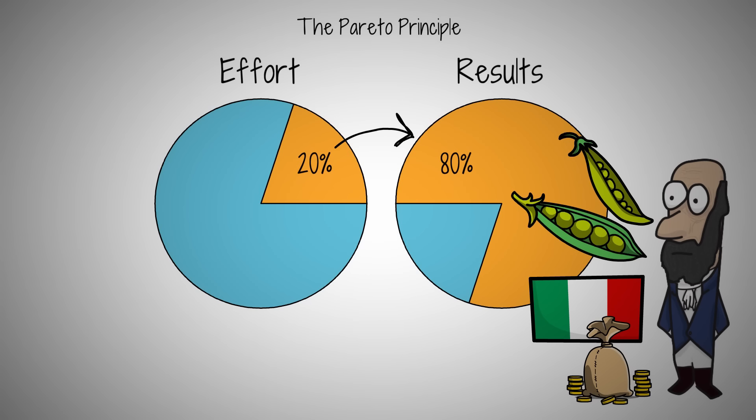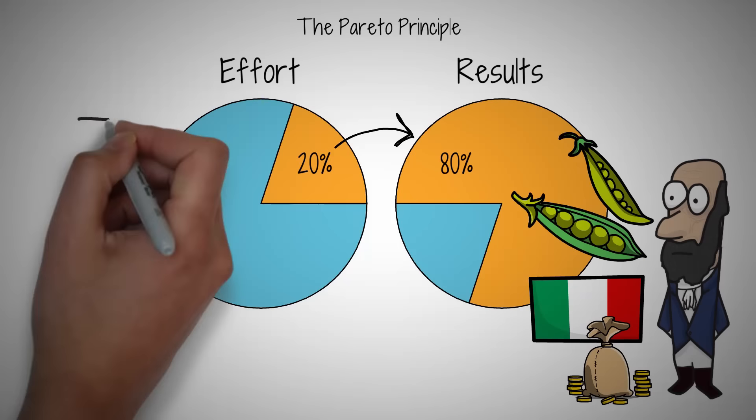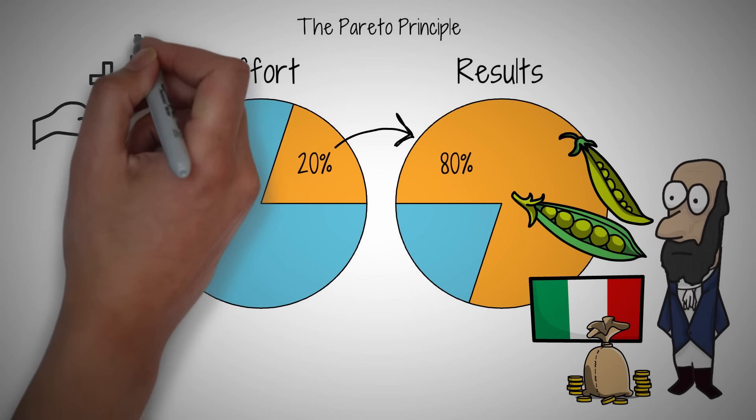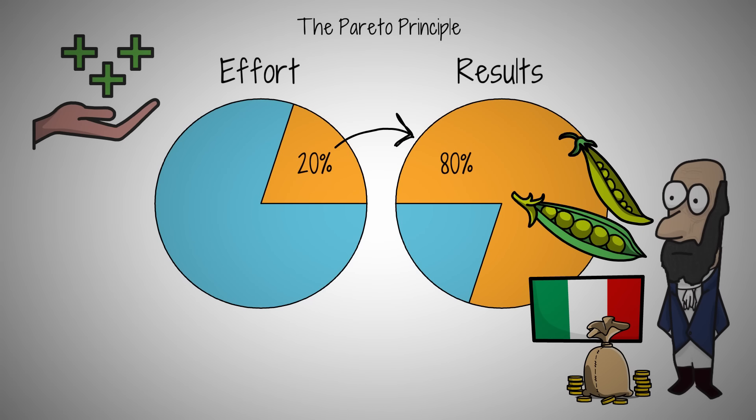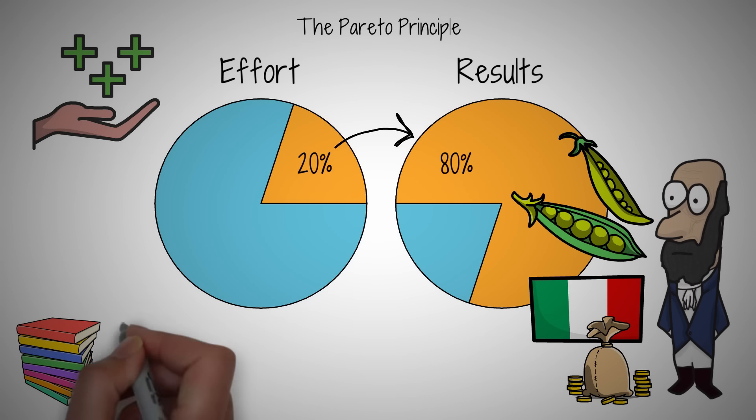This principle, now named after Pareto, has been found to apply in various areas of life and business. It states that a minority of causes, inputs, or efforts often lead to a majority of the results, rewards, or outcomes.